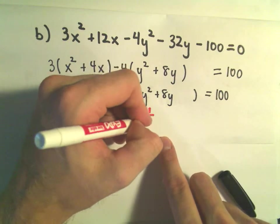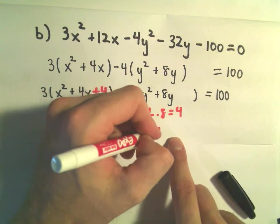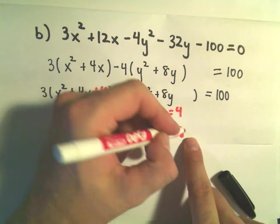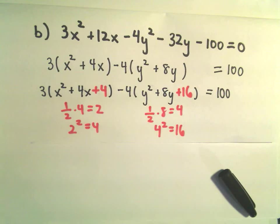Likewise, I'm going to take 1 half of positive 8. That will give me positive 4. 4 squared gives me 16. So I'm going to stick a plus 16 inside of that set of parentheses.